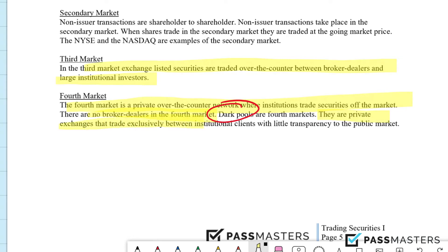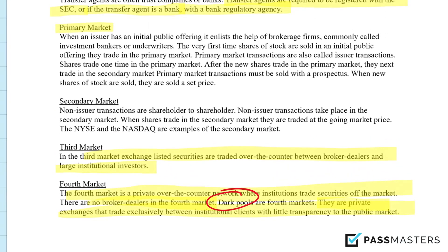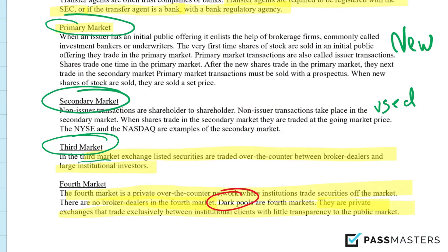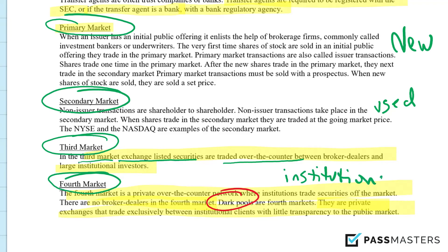Dark pools are fourth markets. They are private exchanges that trade exclusively between institutional clients with little transparency to the general public. To summarize: we have the primary market when the shares are new, the secondary market when the shares are used, the third market where a broker-dealer buys exchange-listed securities and trades them over-the-counter, and the fourth market which is a private over-the-counter network where institutional transactions take place. Dark pools.